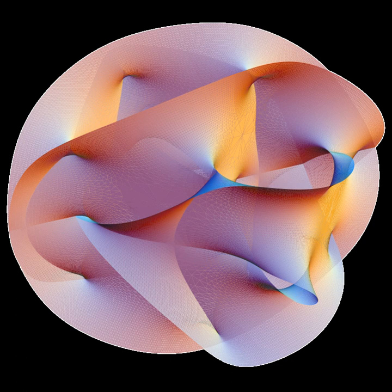Such torsion branes have been applied, for example, to model Douglas-Shenker strings in supersymmetric U gauge theories.